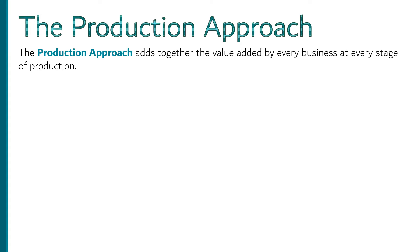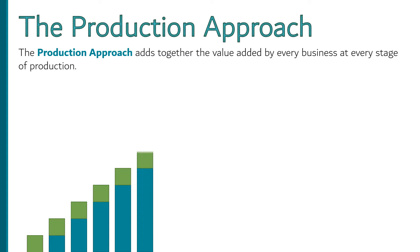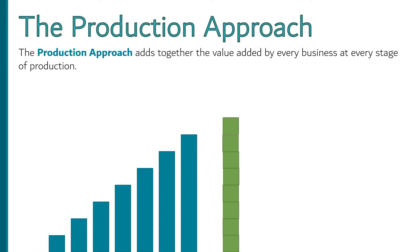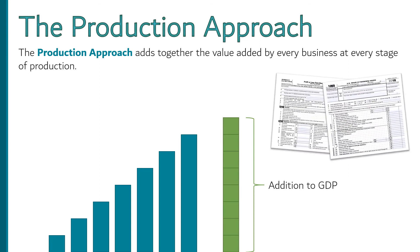The production approach adds together the value added by every business at every stage of production. Remember, this is just an approach to calculating GDP, which is the market value of all final goods and services produced within a country in a year. We only want to count the final goods and services, not the intermediate goods made along the way. The production approach gets us that result in a way that's easier to actually compute. We can use the tax returns of businesses to identify the difference between their sales and the costs of their raw materials. Note that this is not the same as profit, since a lot of the difference will be going to pay the workers and the other costs businesses face to add the value they add. By looking at the value added across all businesses in the country, we don't have to worry about whether the products they make are final goods and services or intermediate ones, which can be harder to measure in practice.